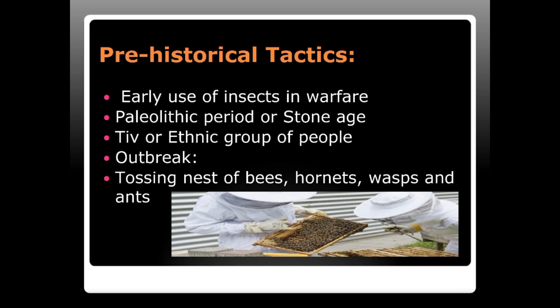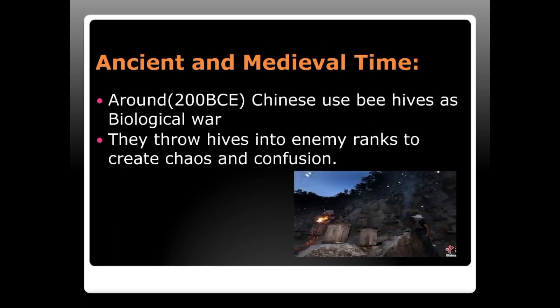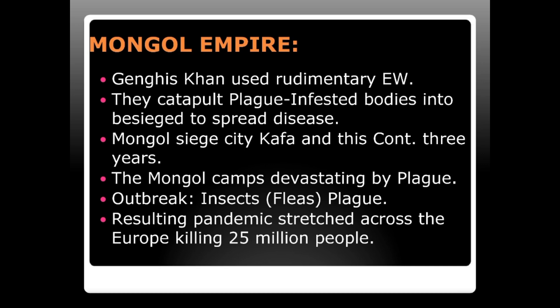In medieval times, around 200 BCE, the Chinese used beehives as biological weapons, throwing them into enemy ranks to create chaos and confusion. The Mongol Empire under Genghis Khan was well known for rudimentary entomological warfare — they catapulted plague-infested bodies into besieged cities. The Mongol siege of Kaffa lasted about three years, and the resulting plague outbreak stretched across Europe, killing about 25 million people.